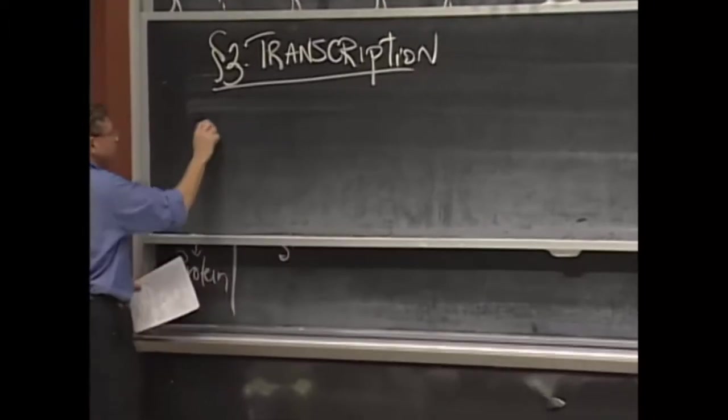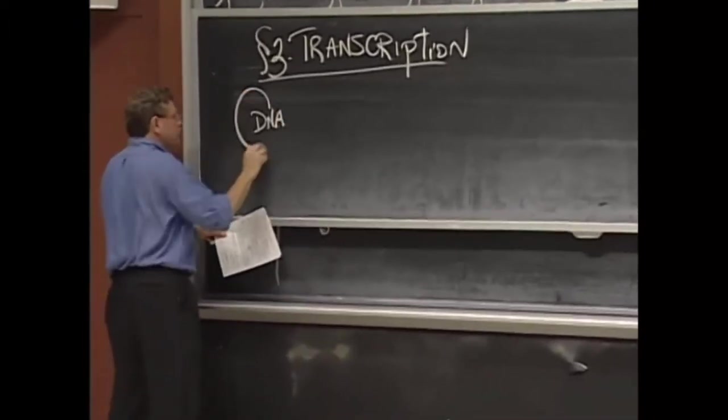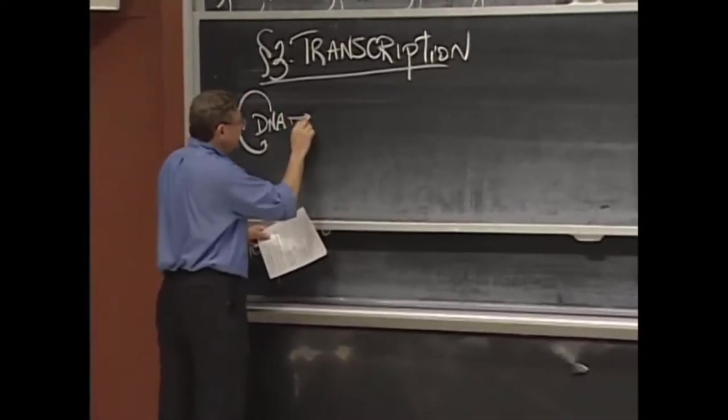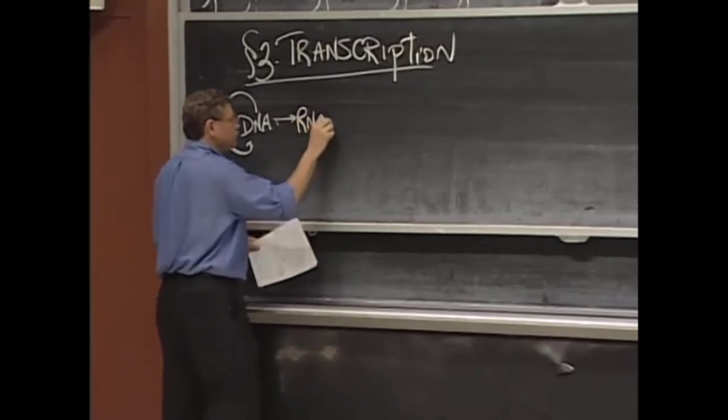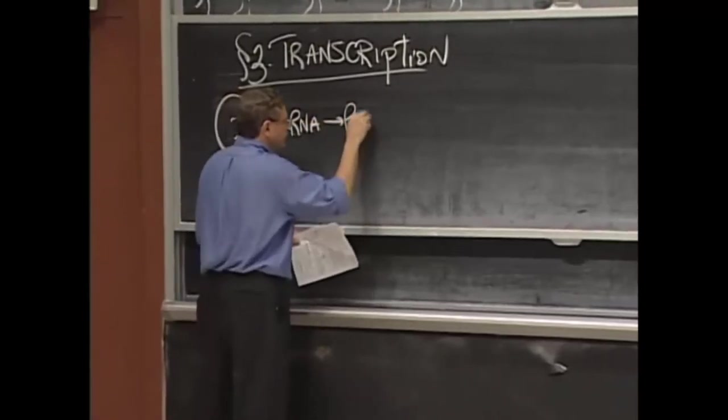So we have DNA goes to DNA. DNA makes RNA. RNA makes protein.